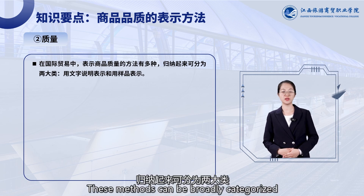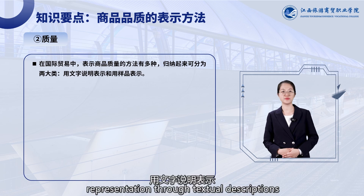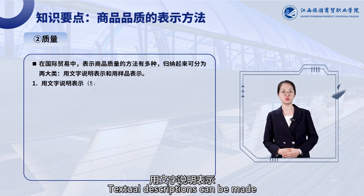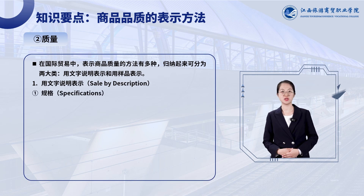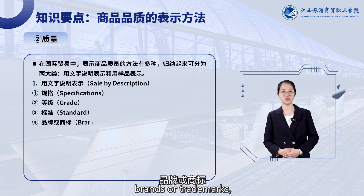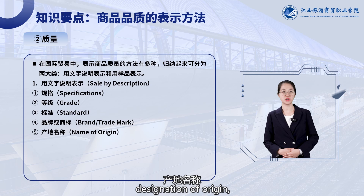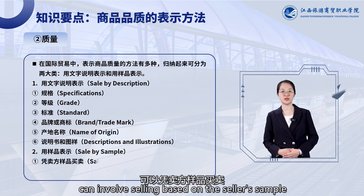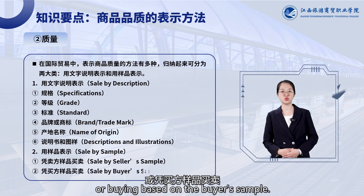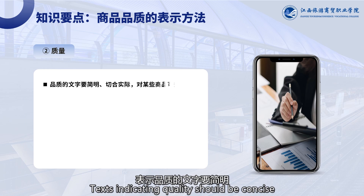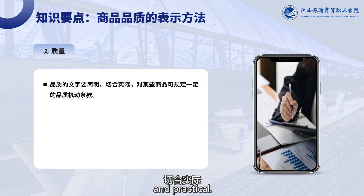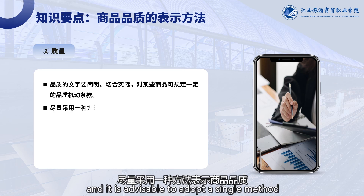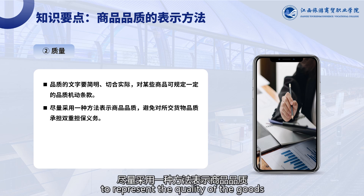The methods used in international trade to represent the quality of goods can be broadly categorized into two types: representation through textual descriptions and representation through samples. Textual descriptions can be made using specifications, grades, standards, brands or trademarks, designations of origin, manuals, and illustrations. Representation through samples can involve selling based on the seller's sample or buying based on the buyer's sample. Text indicating quality should be concise and practical.